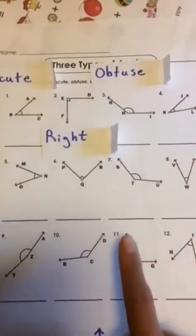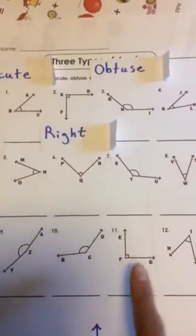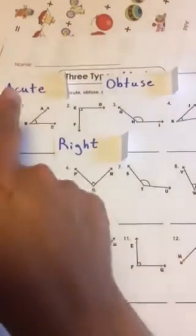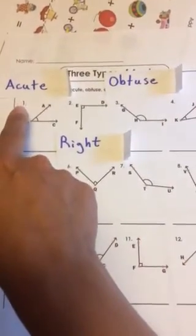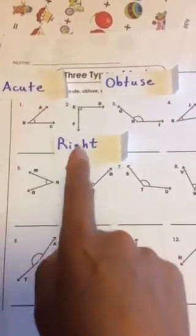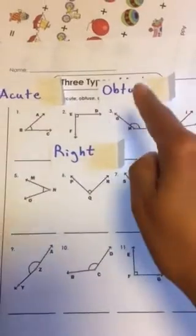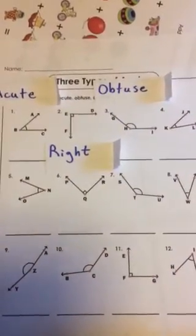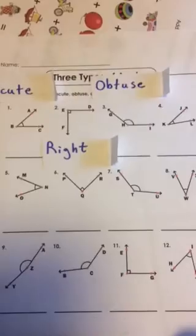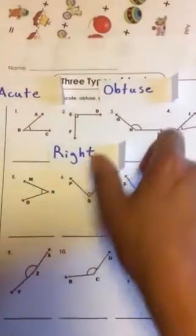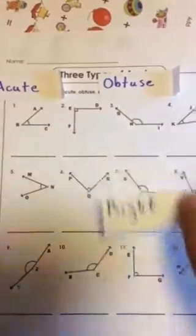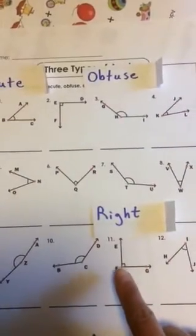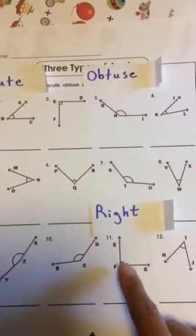Okay, look at number eleven. Is it acute, right, or obtuse? What do you think, guys? That's right — it is another example of a right angle. See the little sharp corner and the little square.